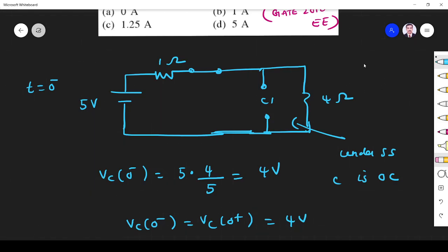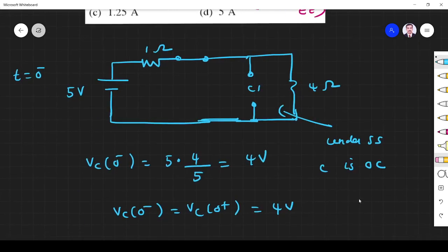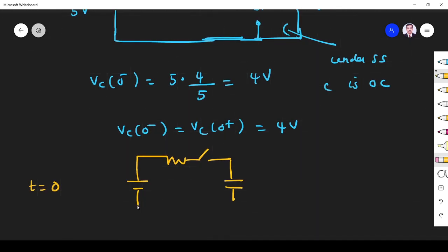Now what happens at t = 0? The switch is opened. So at t = 0, the switch is open. It will be like this. At t = 0, here 4 volt, here 4 volt.